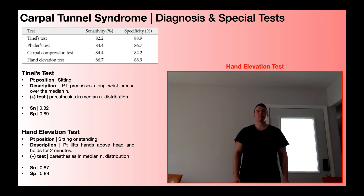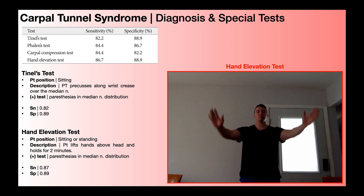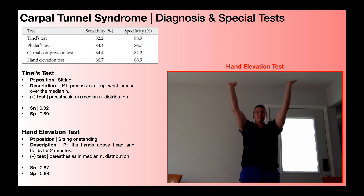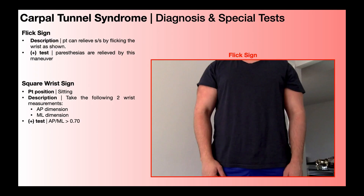Next is the hand elevation test. The patient is sitting or standing and lifts their hands above their head, holding for two minutes — so you'll want a stopwatch. A positive test is paresthesias reproduced in the median nerve distribution. The sensitivity is 87% and specificity is 89%.